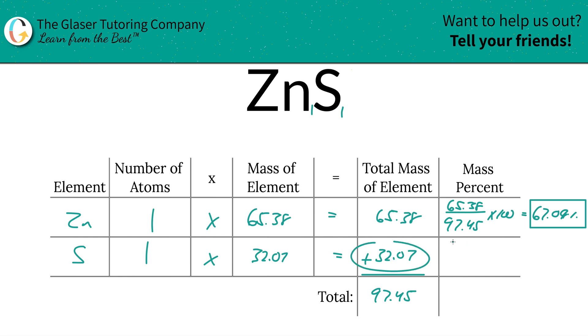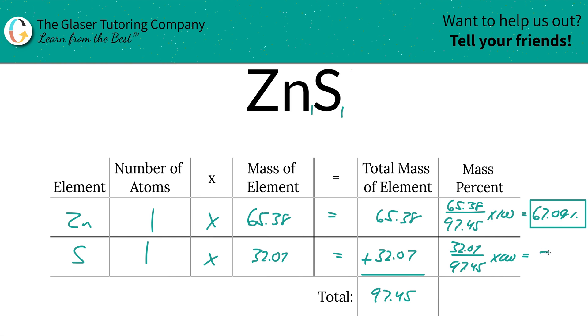Next, sulfur. Take the total mass of sulfur — 32.07 — divided by the total mass of the entire compound, 97.45, multiply that by 100, and you're going to get a percentage of about 32.91%.